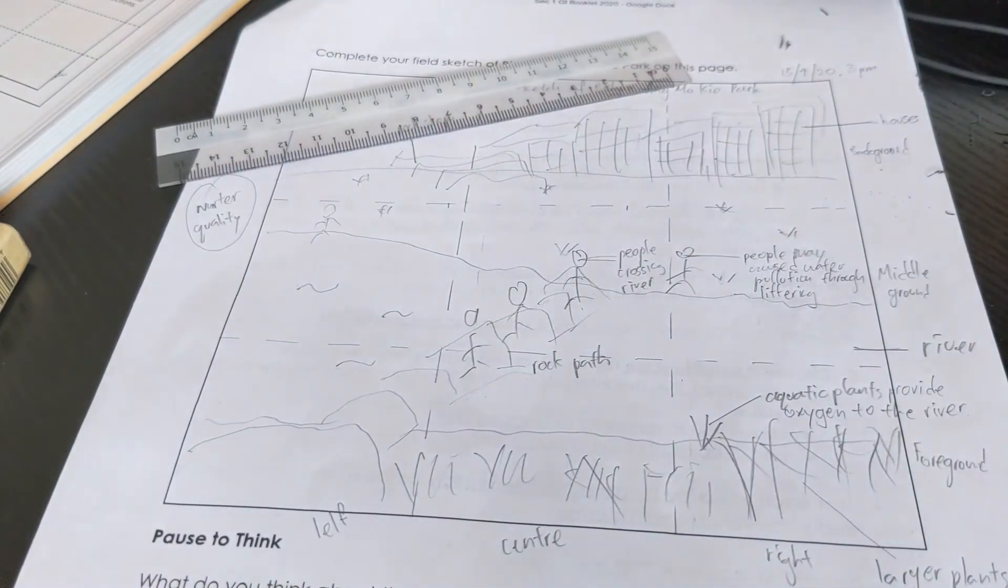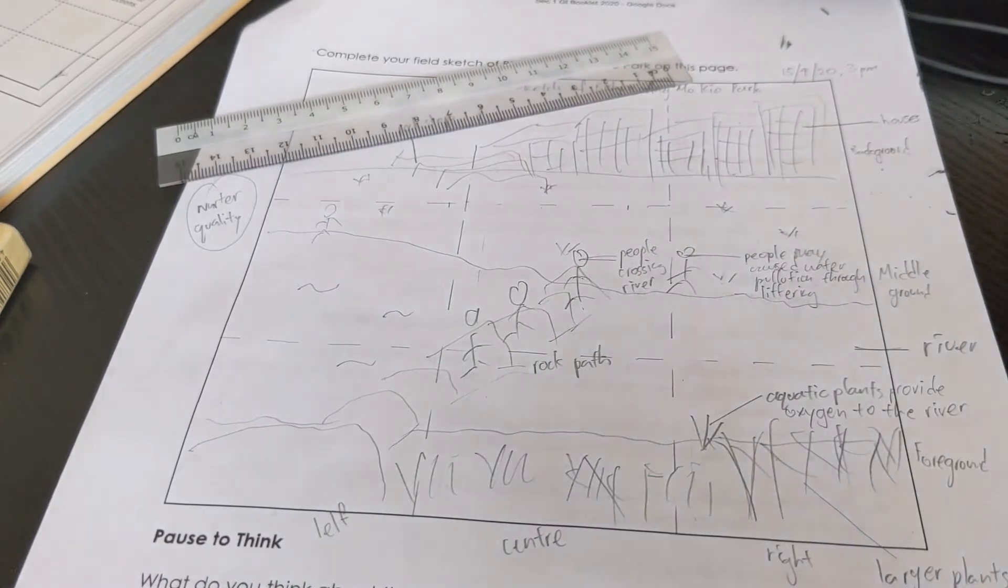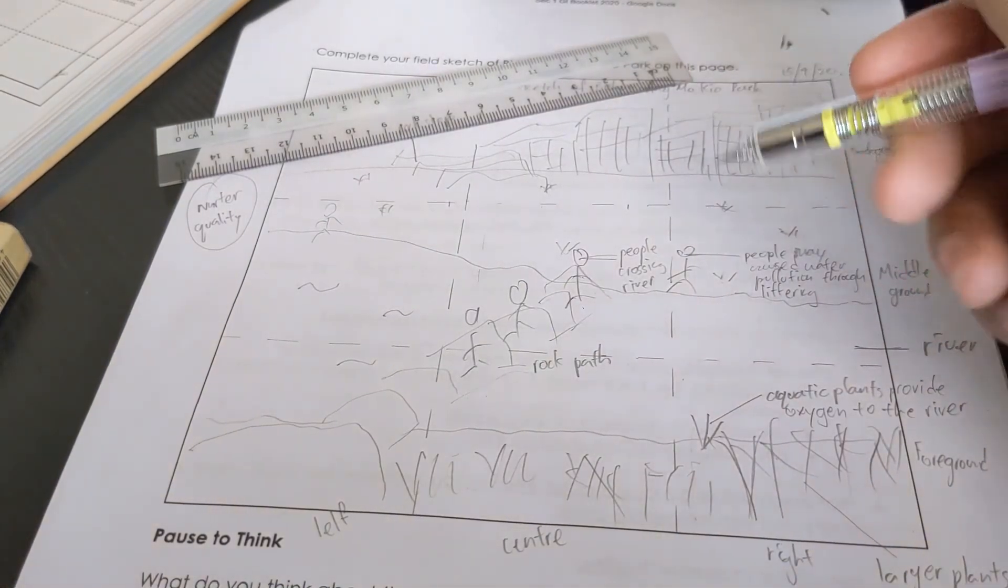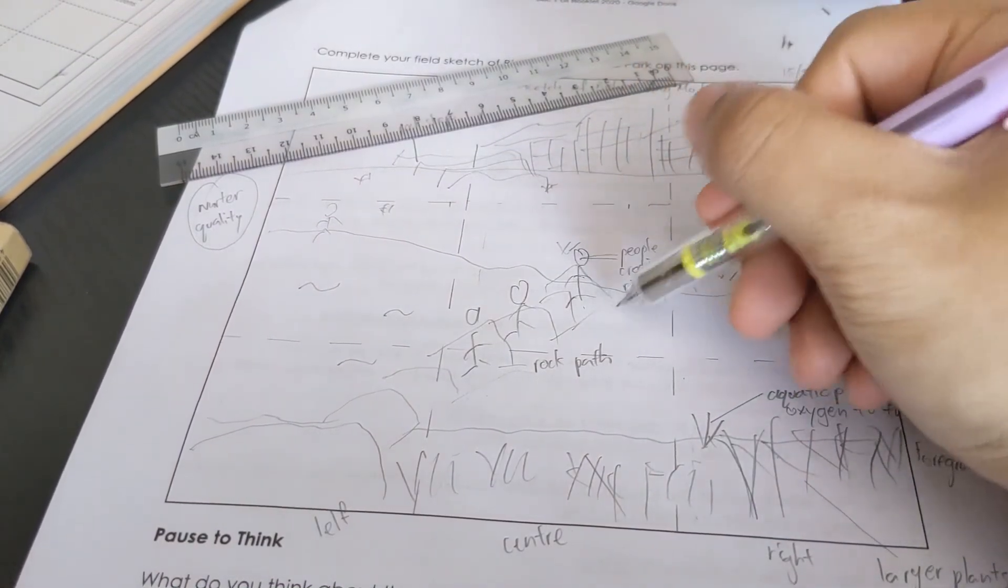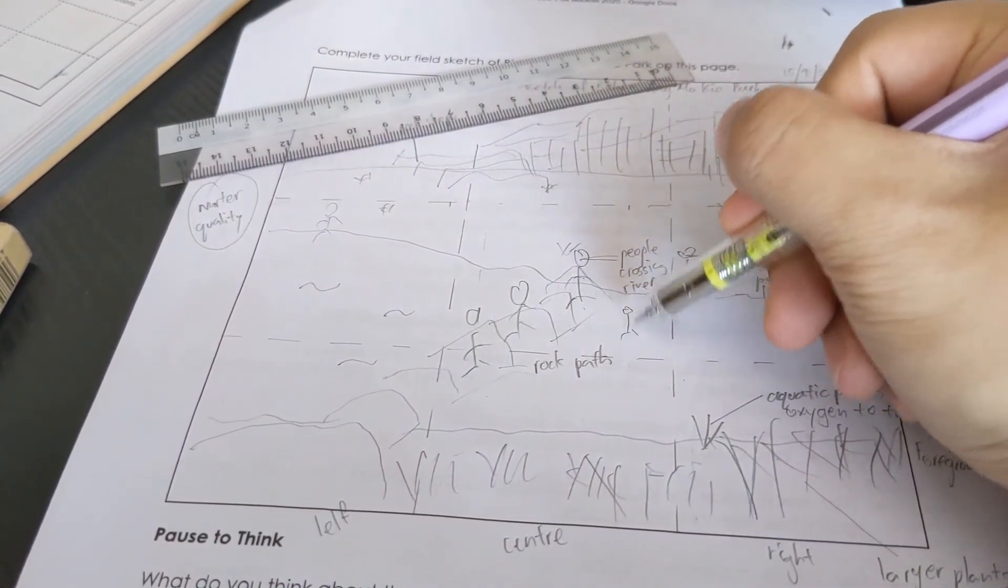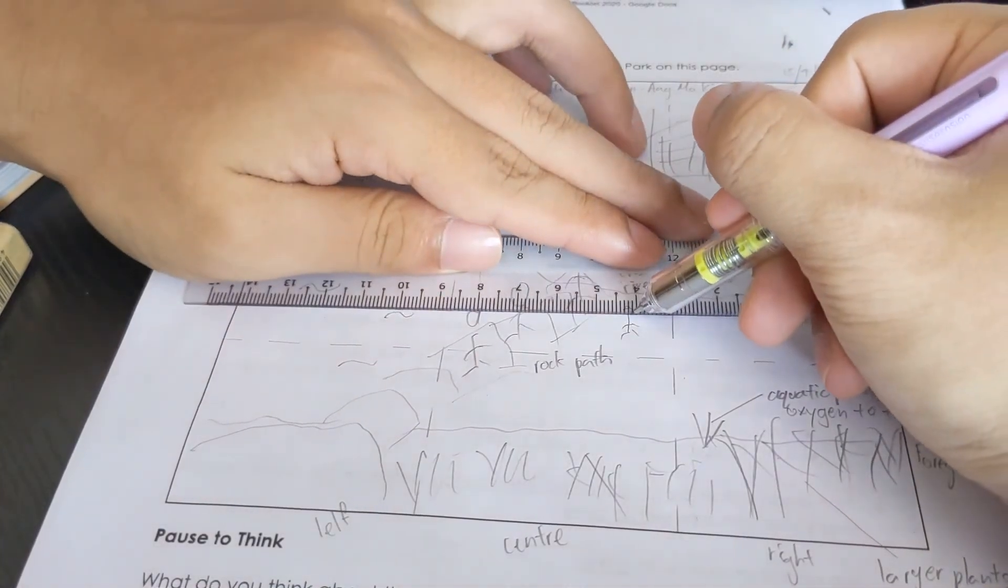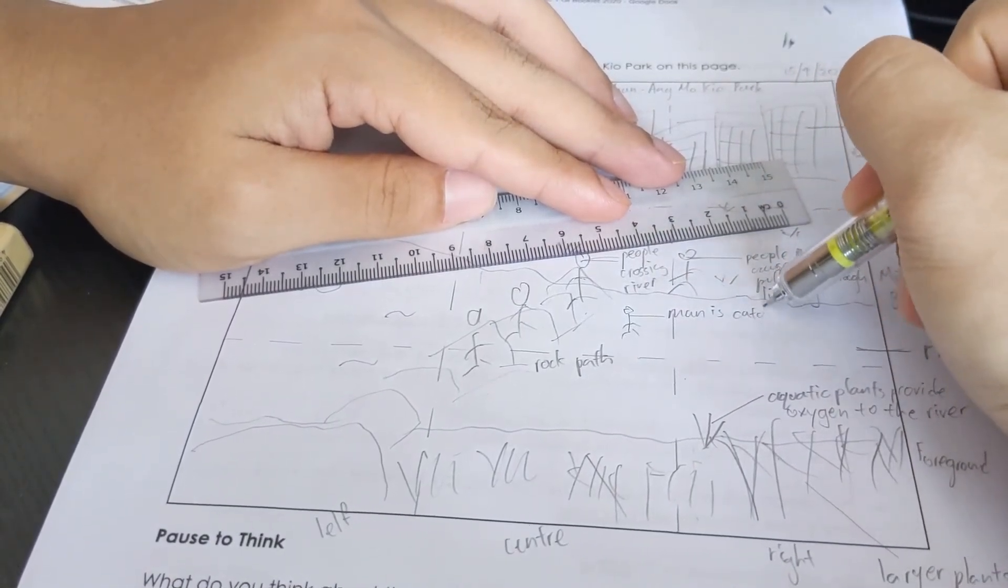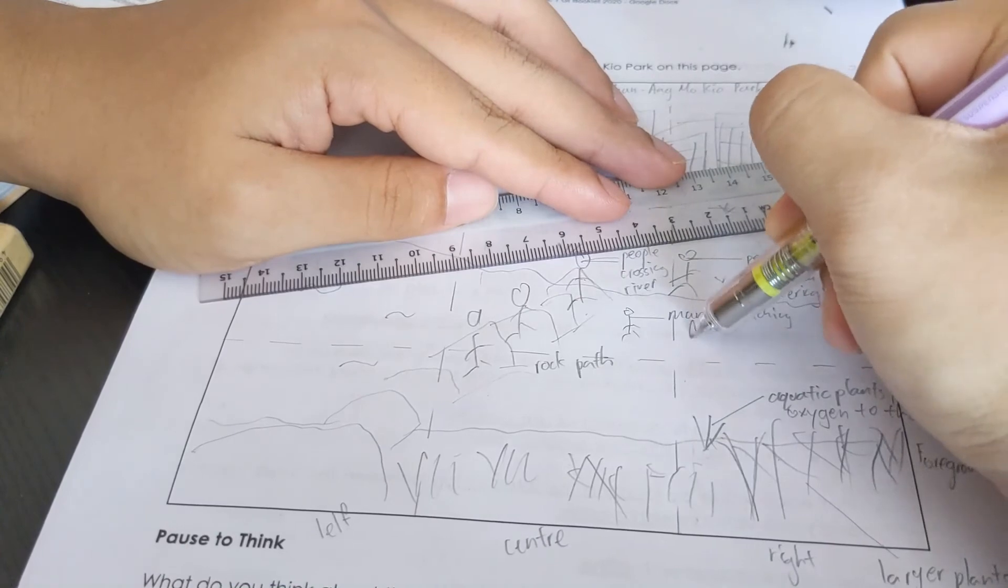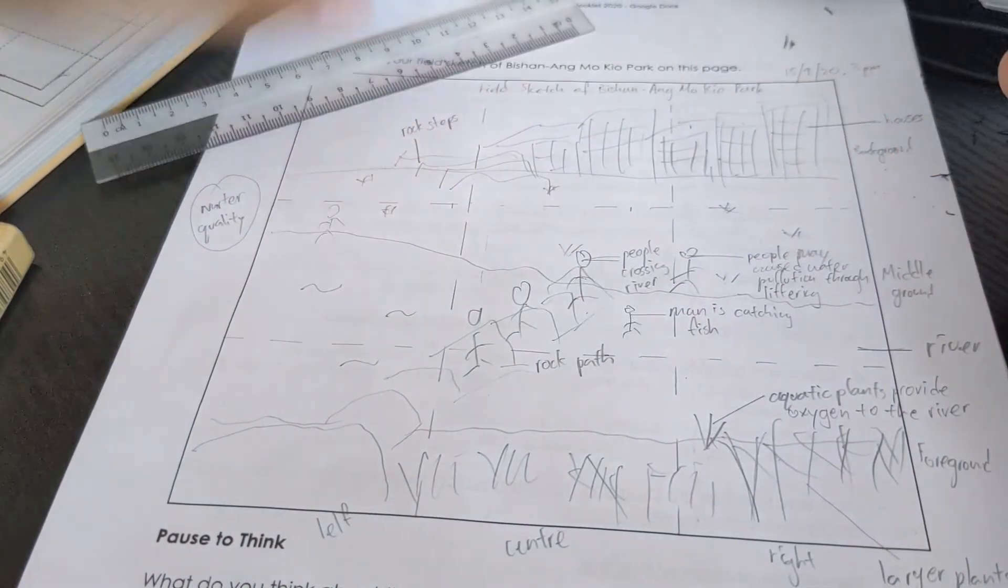Now if we look at the picture, where else did the other people doing over there? Nothing much right? Oh got one guy, he's collecting water. So it looks like he's fishing. So that man is standing here. So I can label him, man is catching fish. Something like that.